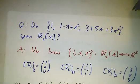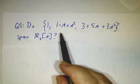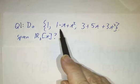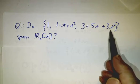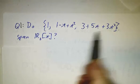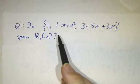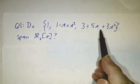For example, suppose we're looking in the space of quadratic polynomials. I ask you, we've got three functions: the function 1, the function 1 minus t plus t squared, and the function 3 plus 5t plus 3t squared. You wonder, do they span R_2[t]? If I give you an absolutely arbitrary polynomial, can you write it as a linear combination of these functions?